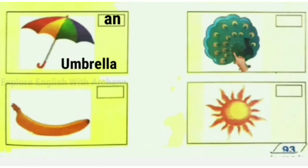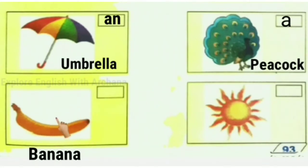Peacock is spelled P-E-A-C-O-C-K. P is a consonant, so we write 'a'. Banana - B is a consonant, so 'a banana'. And here the sun. The sun - we use 'the' before sun. Why? Because there is only one sun in the world, so we always use 'the' before sun. The sun.